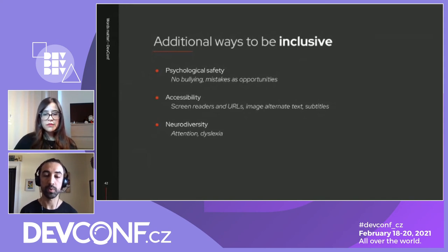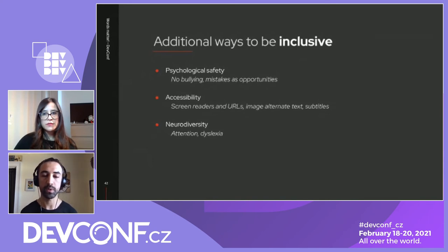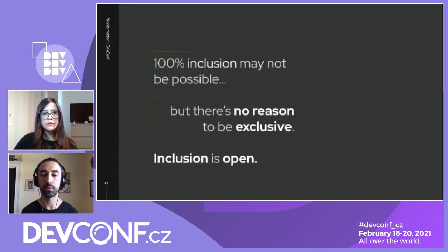Also respect diversity — everybody has different abilities and capacities regarding attention or processing written words, so make sure you're including people. A hundred percent inclusion may not be possible, but there's really no reason to be okay with being exclusive, because inclusion is open.